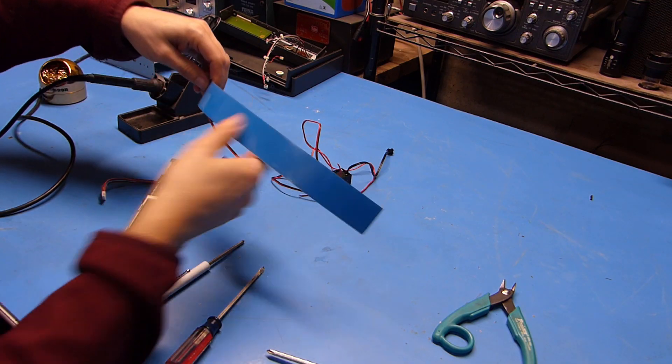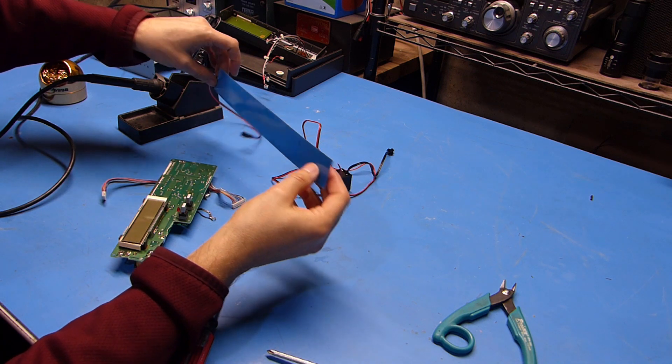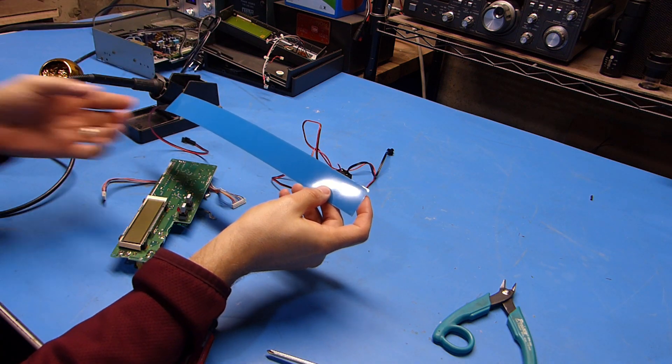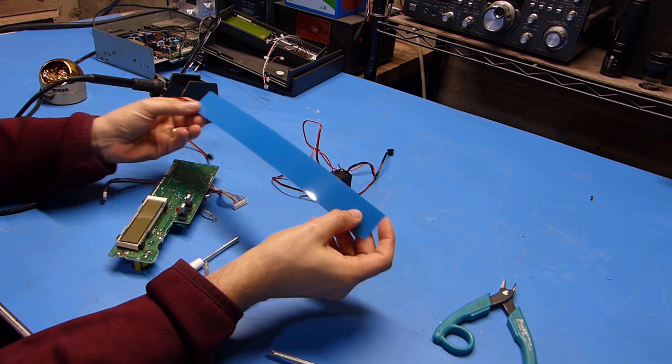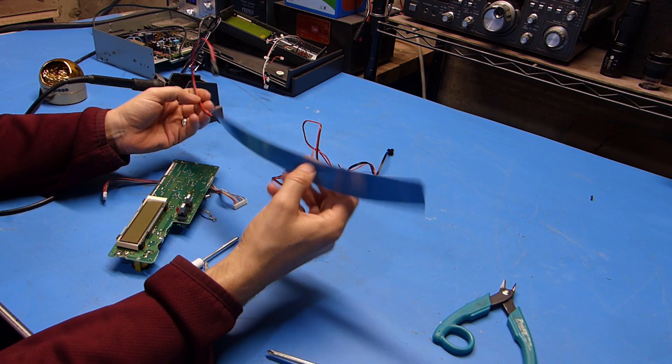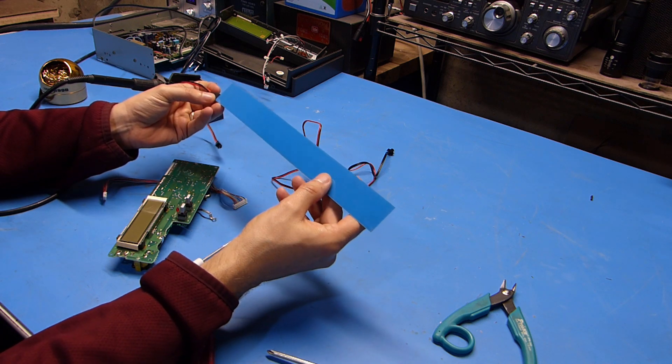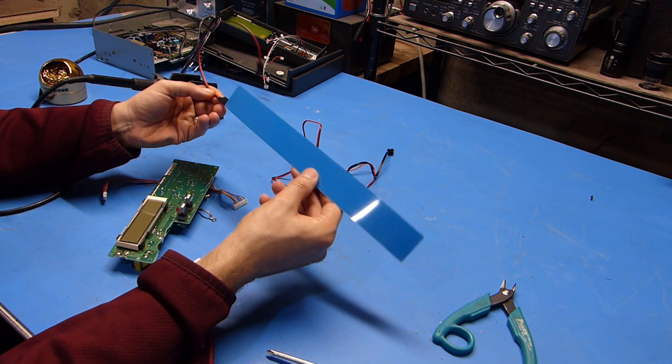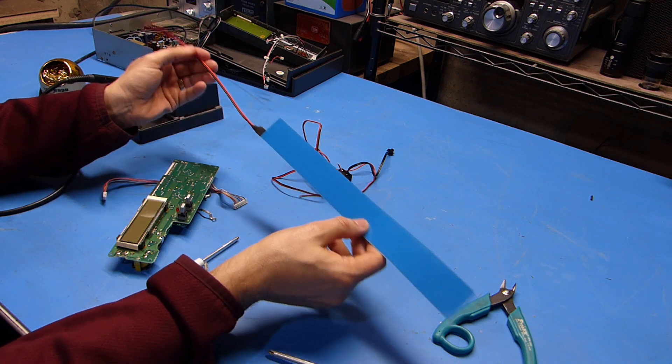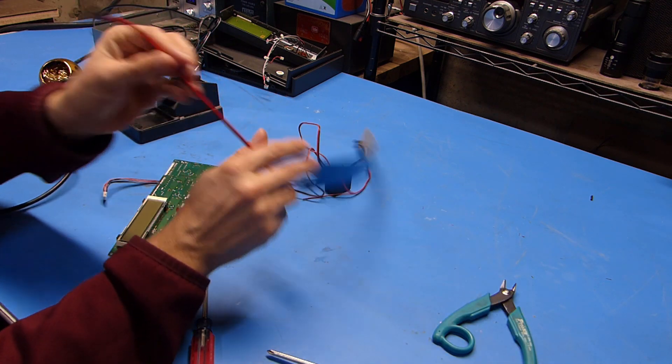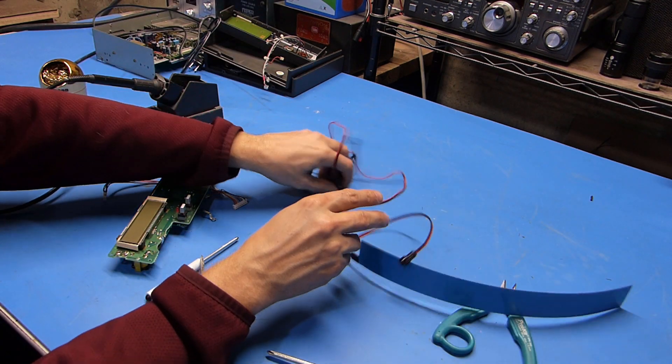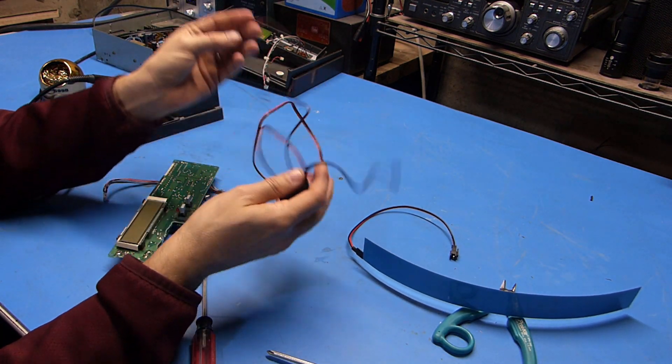So here's a look at the new electroluminescent strip that I bought to replace the old one. Now obviously you can see this is a lot bigger than I need so I'm going to have to cut this. This was really all I could find that was even close and at a reasonable price. I got this from eBay and I'll leave a link in the description below. You can see that it comes with an integral kind of pigtail with a connector on the end of it and then it comes with this little inverter box.